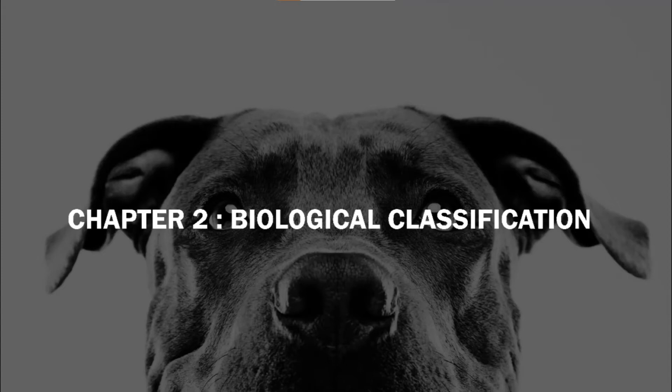Slime molds are saprophytic protists. The body moves along decaying twigs and leaves, engulfing organic material. Under suitable conditions, they form an aggregation called plasmodium, which may grow and spread over several feet. During unfavorable conditions, the plasmodium differentiates and forms fruiting bodies bearing spores at their tips. The spores possess true walls, are extremely resistant and survive for many years even under adverse conditions. The spores are dispersed by air currents.